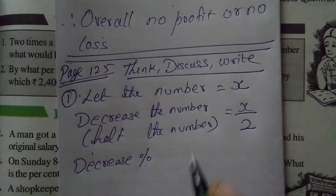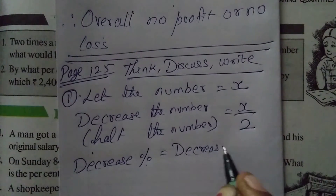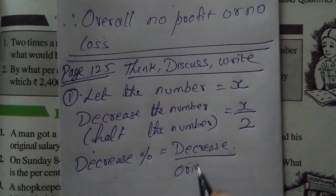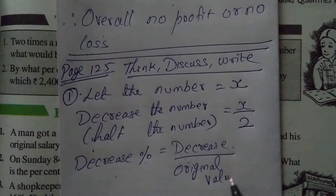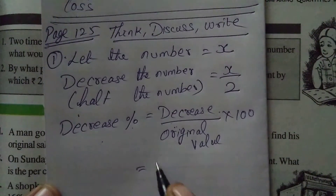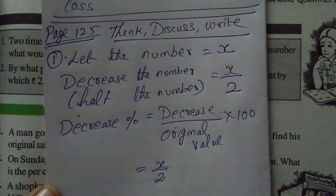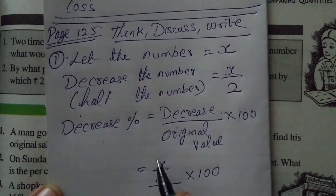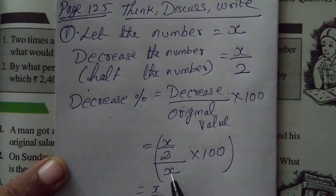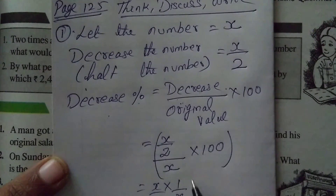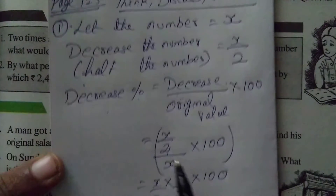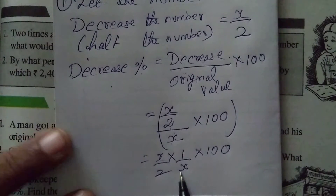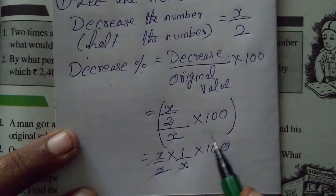Decrease percentage is like discount: decrease divided by original value into 100. Decrease is x/2, original value is x, multiplied by 100. Simplify: x/2 divided by x — bring x to numerator as 1/x. So x and x get cancelled. 2 goes into 100 fifty times. Therefore decrease percentage is 50%.